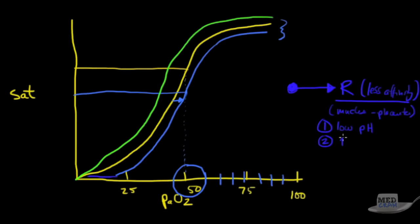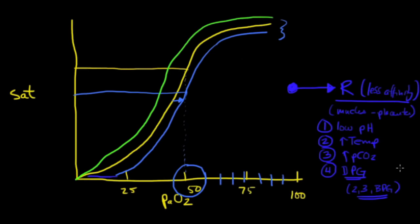Number two, we would see a high temperature. Your muscles are hot when they're working. So that would shift it to the right. We already said that a high partial pressure of carbon dioxide is going to shift the hemoglobin binding curve to the right. Another thing that shifts it to the right is a molecule called DPG, diphosphoglycerate, otherwise known as 2,3-BPG or bisphosphoglycerate. This, as you may recall, is an intermediate of glycolysis.